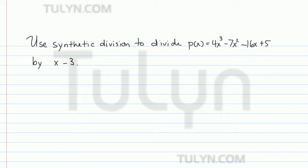Use synthetic division to divide p of x equals 4x cubed minus 7x squared minus 16x plus 5 by x minus 3. Since the divisor is in the form x minus k, then we can use synthetic division.